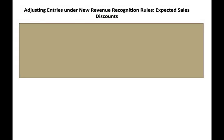Let's take a look at adjusting entries under the new revenue recognition. Specifically, we're going to be looking at sales discount. What do we have to do under the new revenue recognition? We have to estimate our sales discount. Simply put, we have to be proactive — just like we're going to learn later about how to estimate bad debt, we have to estimate how much sales discount we are going to have. Let's take a look at an example and see how we work with this.